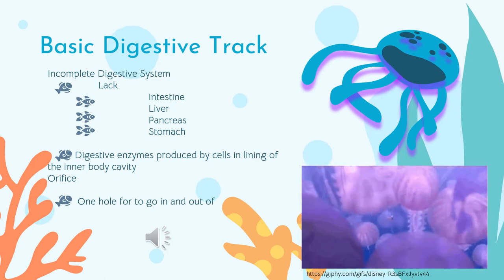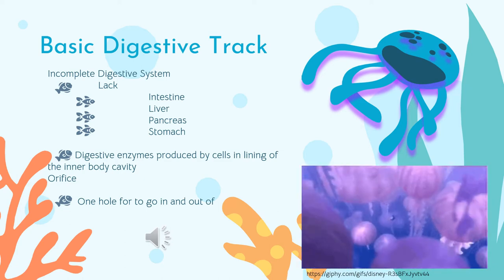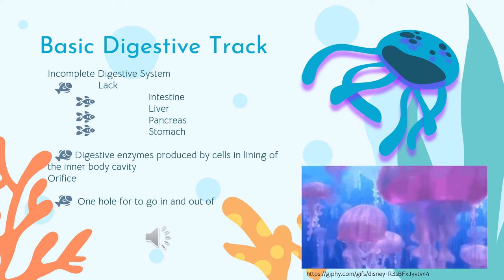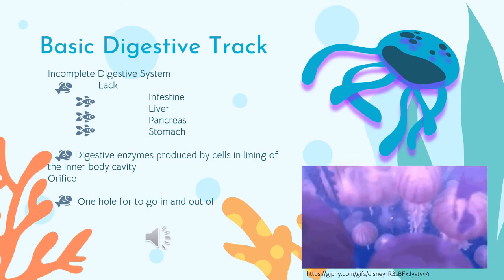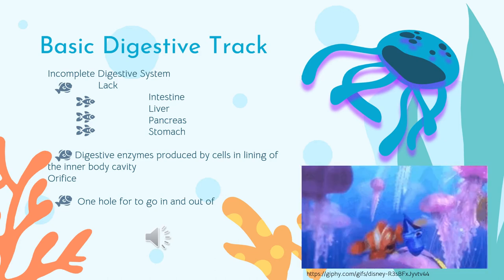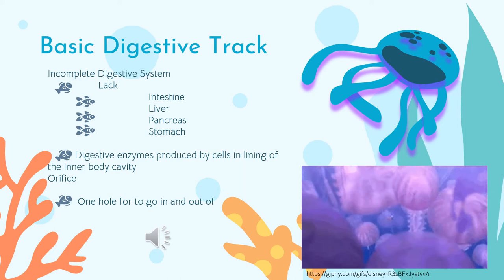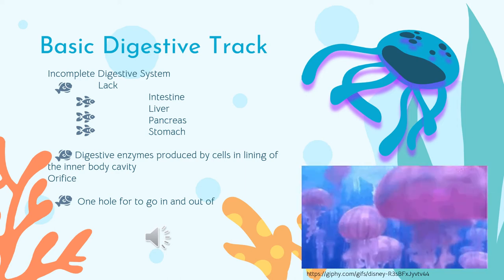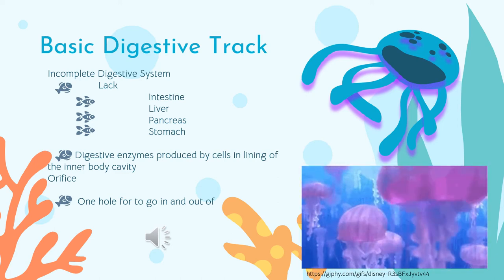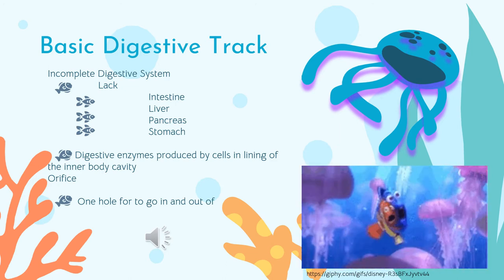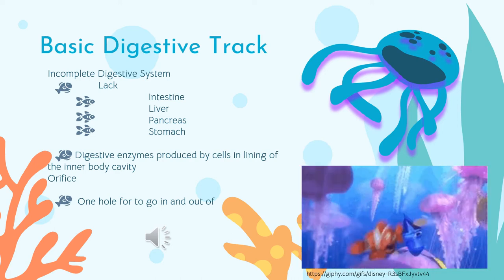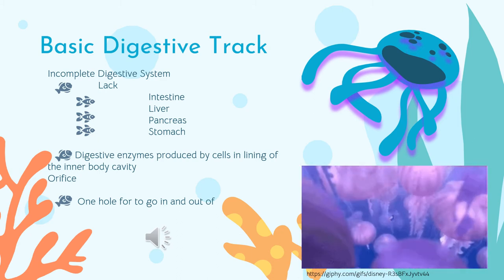The digestive tract is a system in the body which helps with processing food. Jellyfish have a different and incomplete digestive tract compared to ours. This means there are three key parts that jellyfish simply do not have: the intestines, which help digest water and minerals; the liver, which regulates blood levels; and the pancreas, which gives us enzymes to break down food. Jellyfish do, however, have stomachs where cells produce digestive enzymes to break down their food. The last step is the orifice — an opening in the body — and jellyfish only have one, meaning food goes in and exits through the same hole.